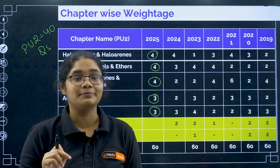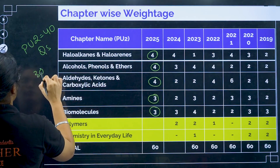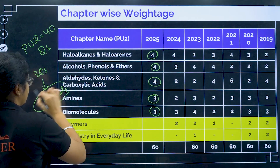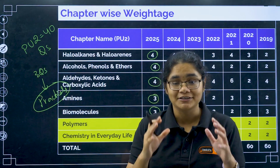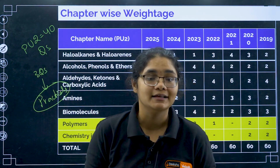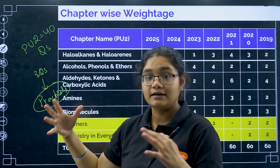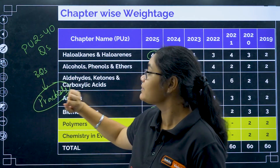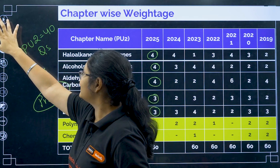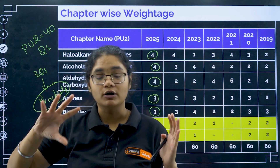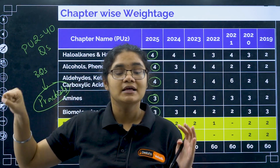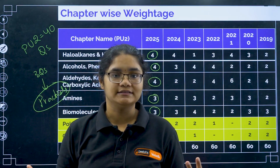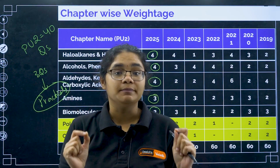The remaining three questions were from practicals. In 2025, KEA specially mentioned the syllabus for practical exams, and all three practical questions were from salt analysis. So the total is 60 marks: 40 questions from PU2, 17 from PU1, and 3 from practicals. So which one should you give more importance? Undoubtedly, it is PU2.